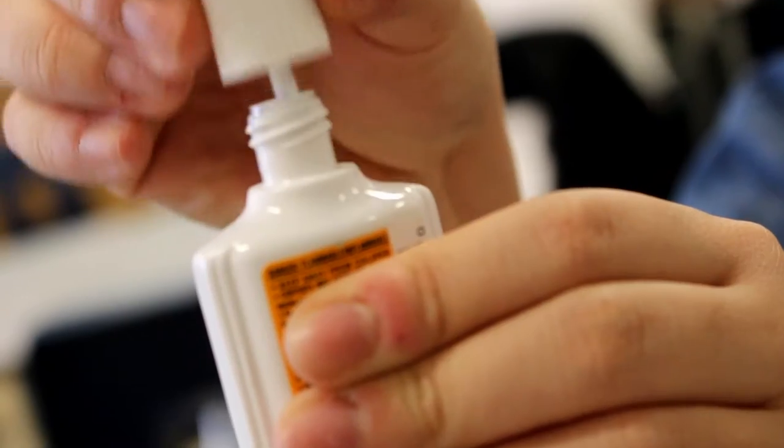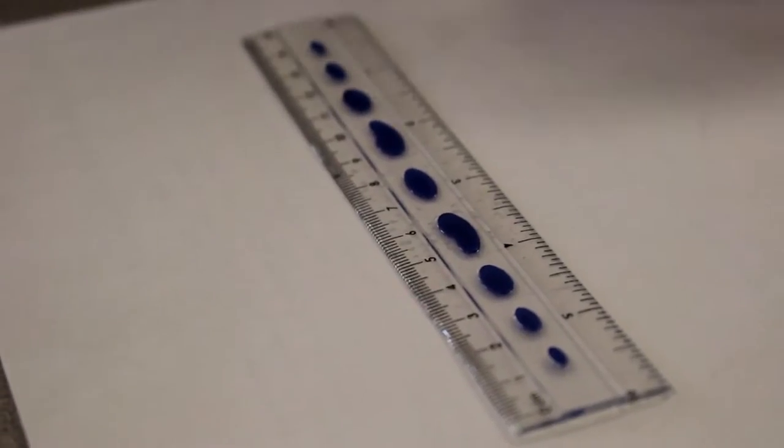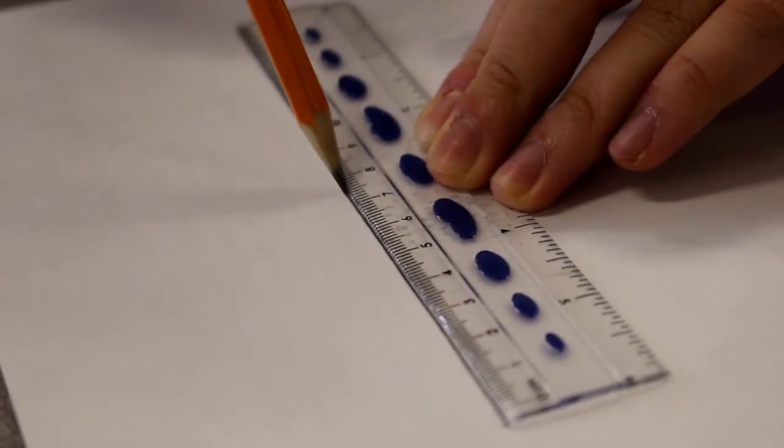However, some of these animals coexist happily with the pencils and work together to complete a task. Like this ruler here, making a straight line with our friend the pencil. See how they work harmoniously?